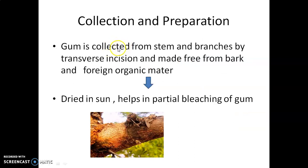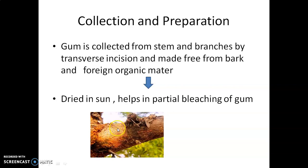The gum is collected from the stem and branches by transverse incision using a small axe, then made free from bark and foreign organic matter. The incision stimulates secretion of gum from the branch. After collecting the gum in tear form, it is made free from bark and foreign matter, then dried under the sun, which also aids in the bleaching process.